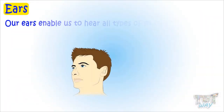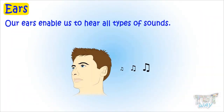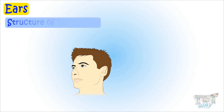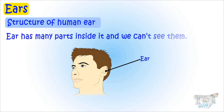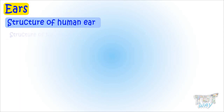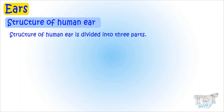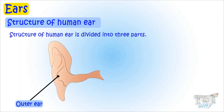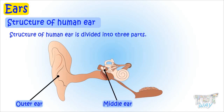Our ears enable us to hear all types of sounds. Today we will learn the structure of a human ear. Ears are not just what you see on the side of your head — it has many parts that are inside and we can't see them. The structure of the human ear is divided into three parts: outer ear, middle ear, and inner ear.